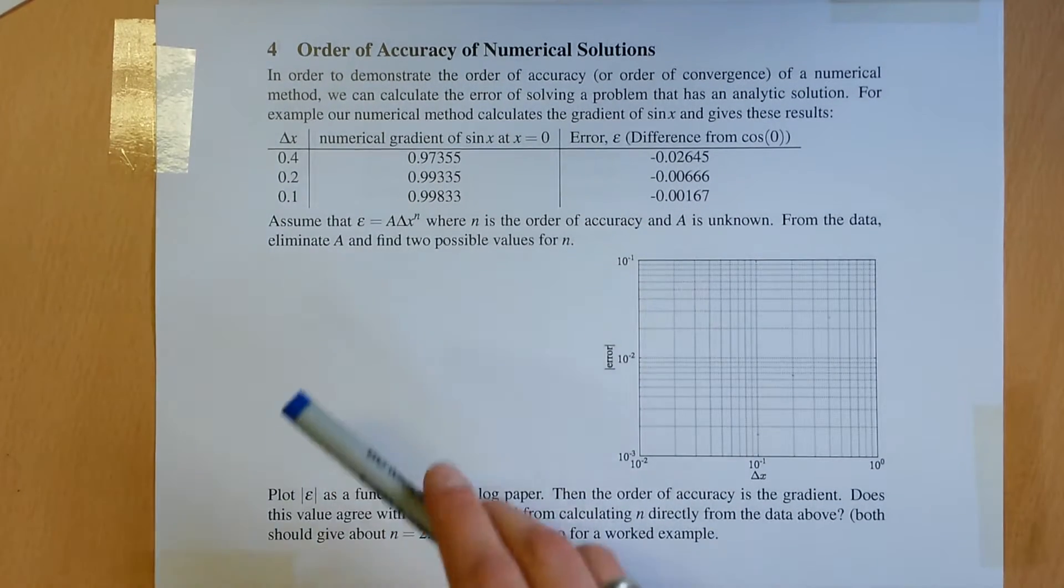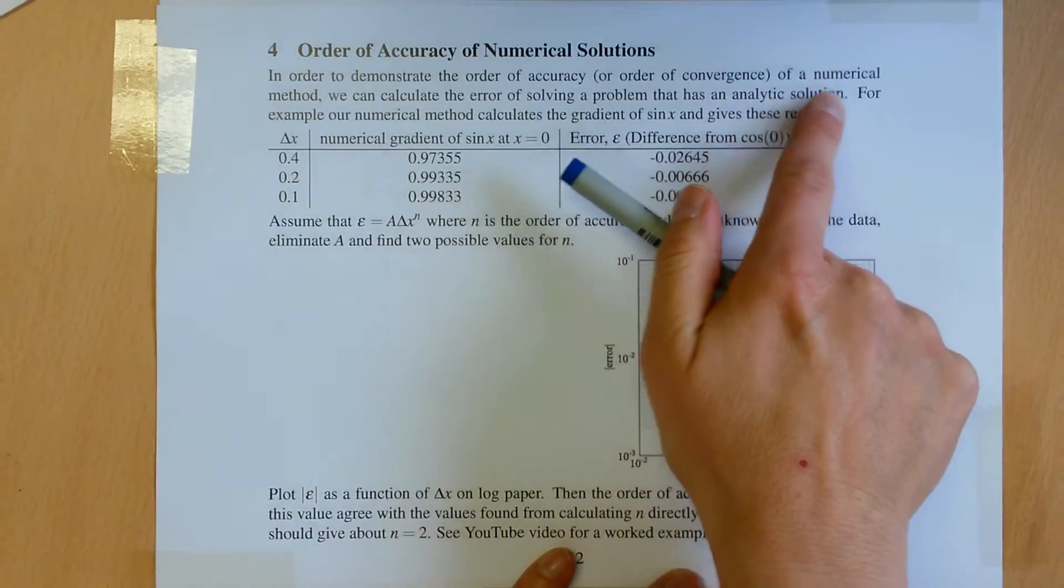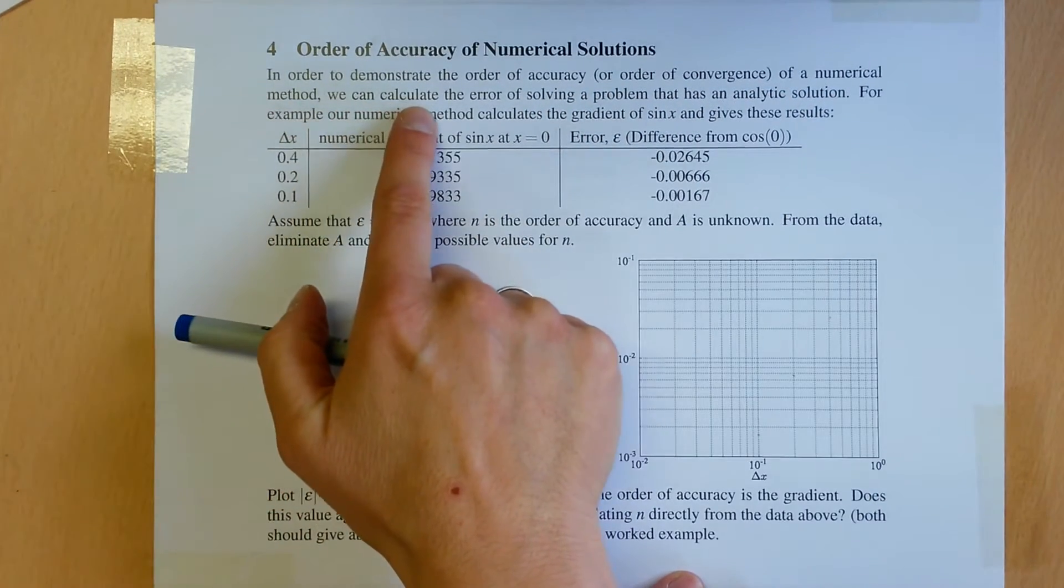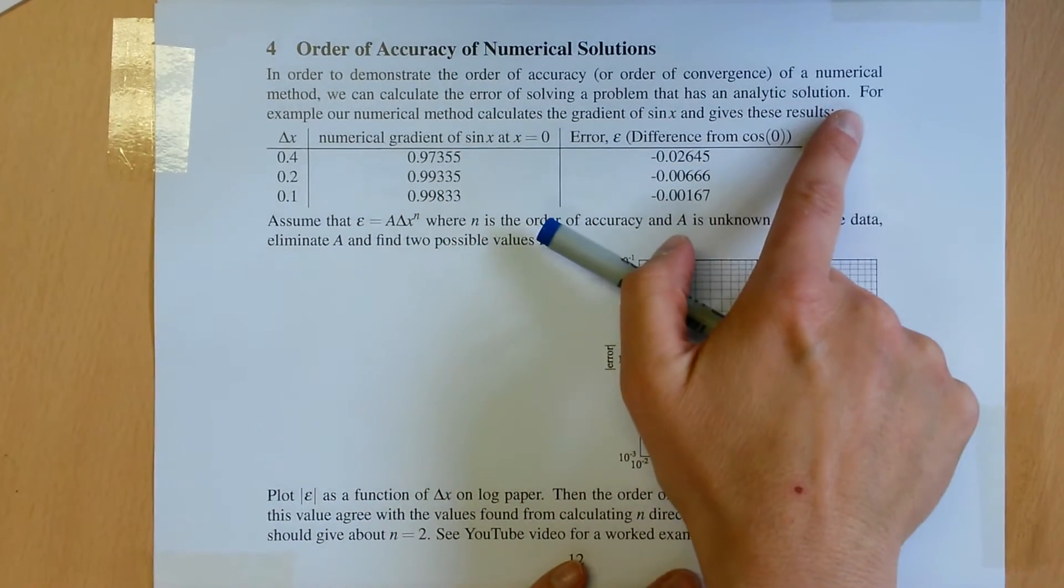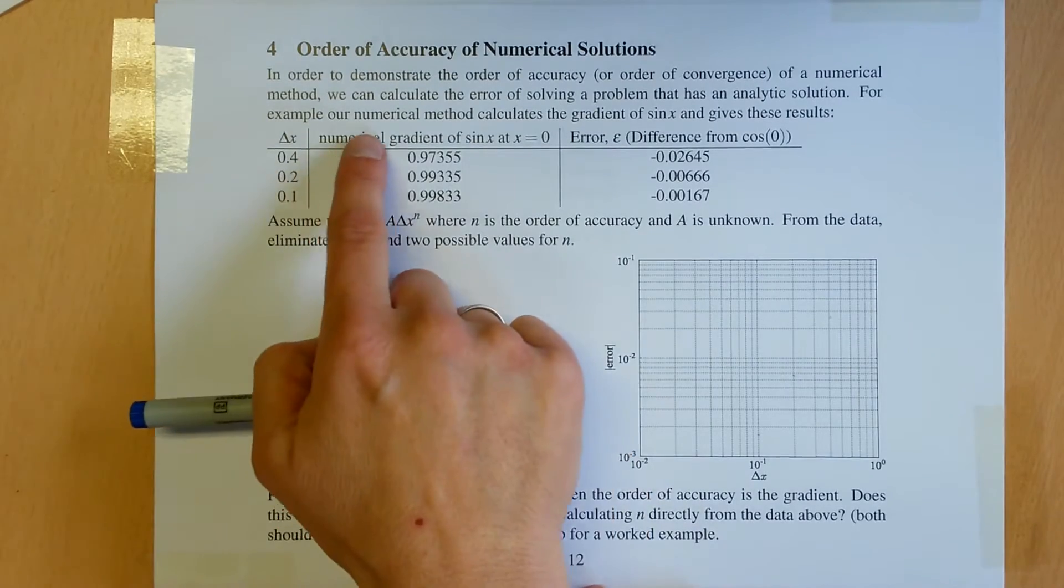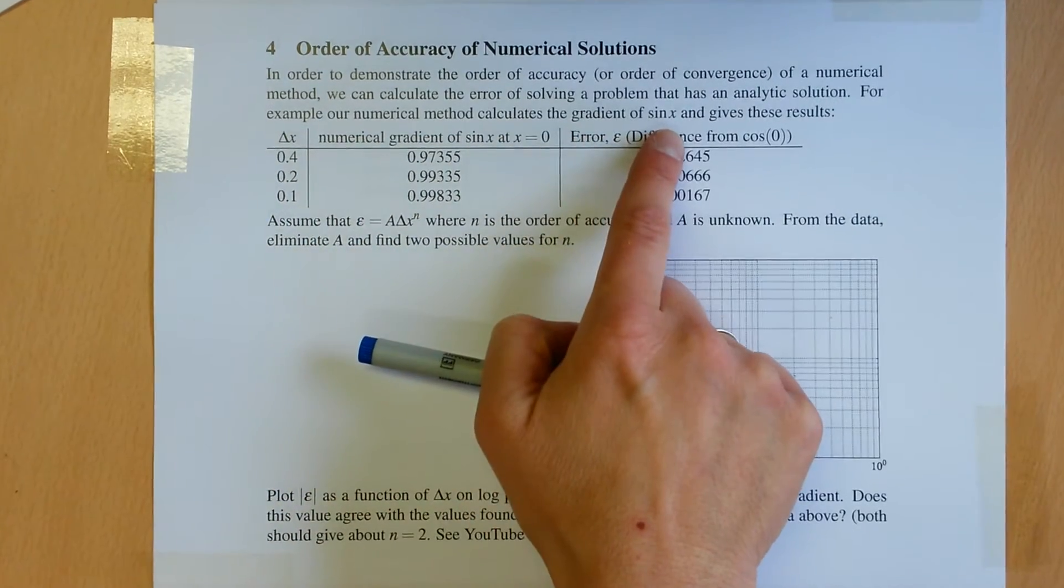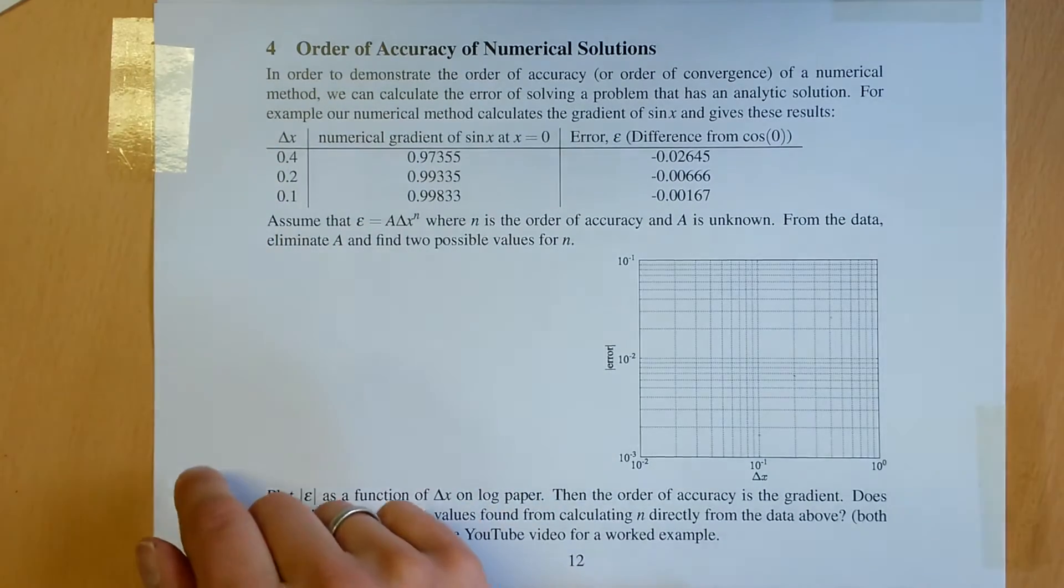In order to demonstrate the order of accuracy or order of convergence of a numerical method, we can calculate the error of solving a problem that has an analytical solution. For example, our numerical method calculates the gradient of sine x, so it uses values of delta x of various sizes.